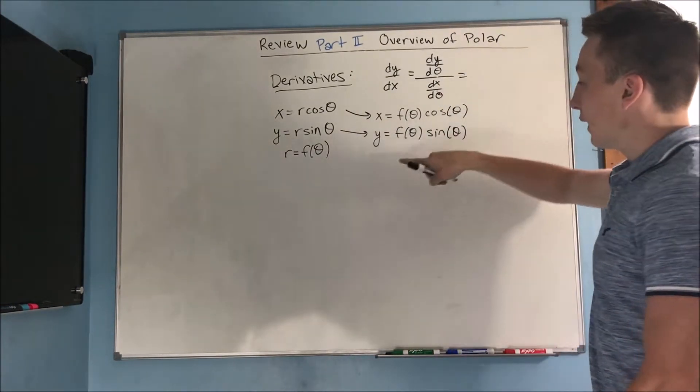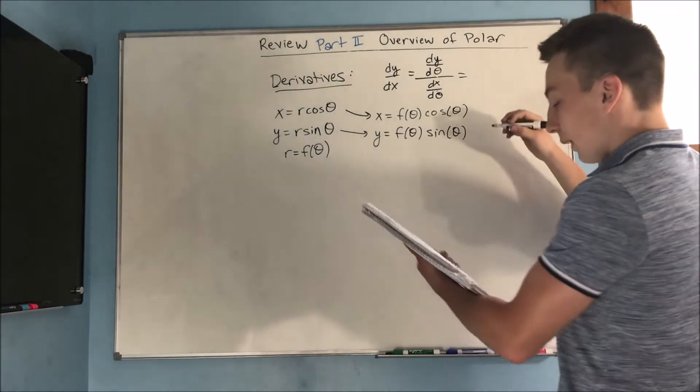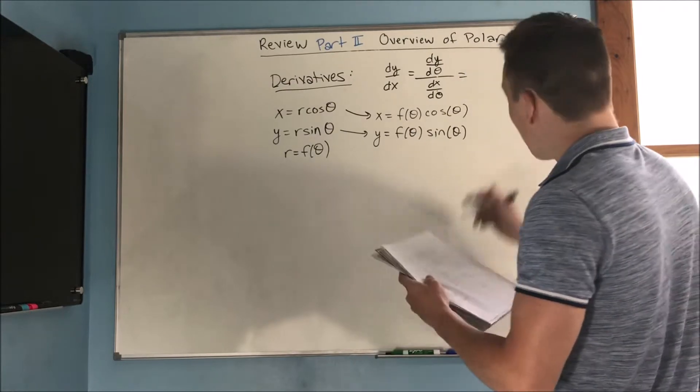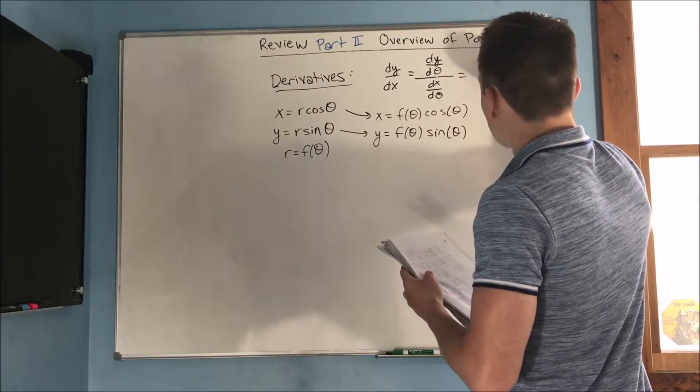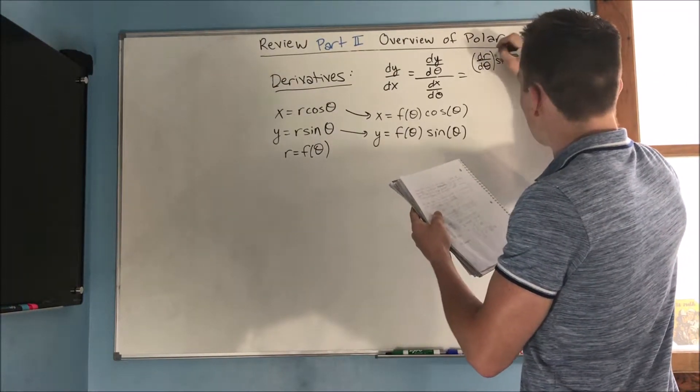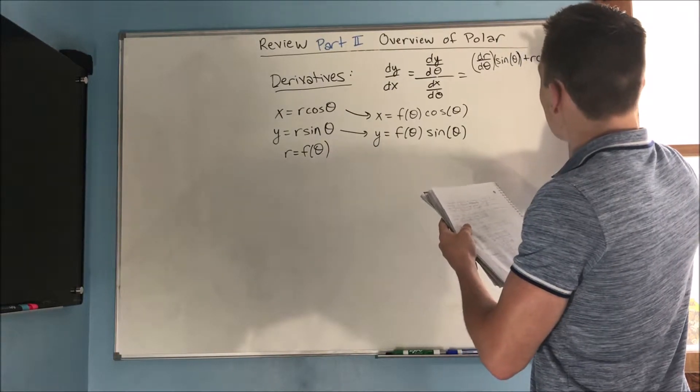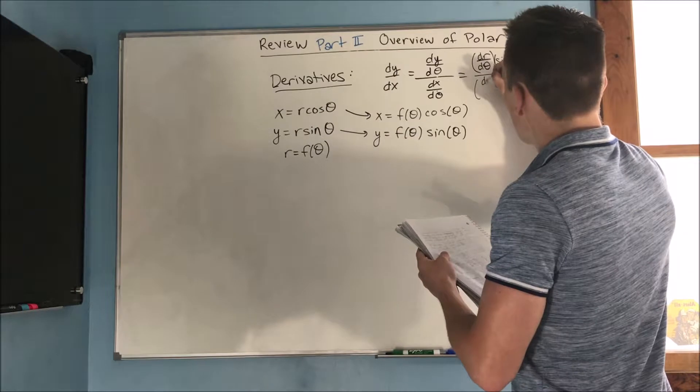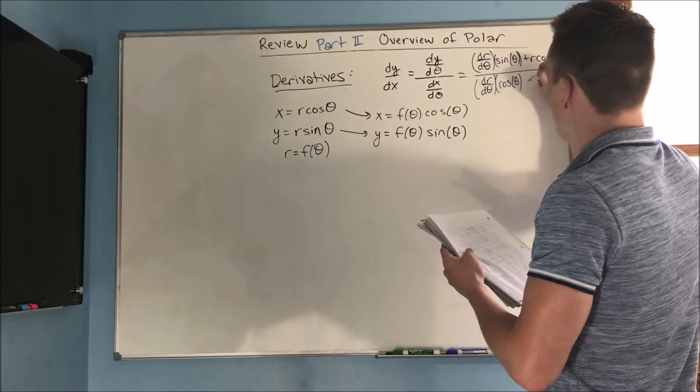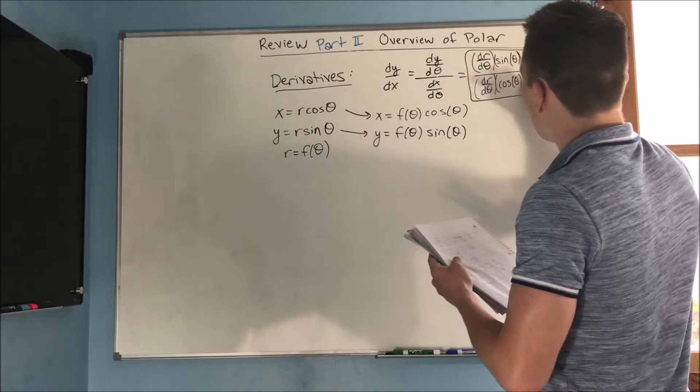When you find dy/dθ, you're taking the derivative here, you kind of see that you're using product rule. So, you get dR/dθ times sine theta plus R cosine theta over dR/dθ times cosine theta minus R sine theta.